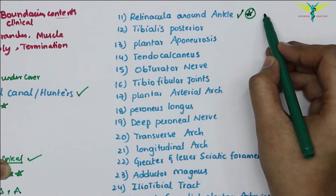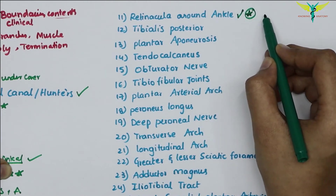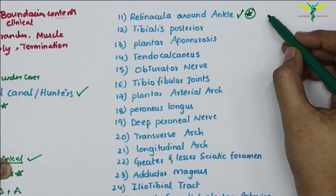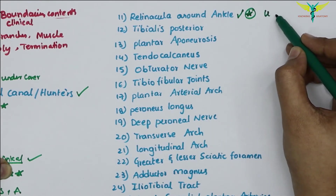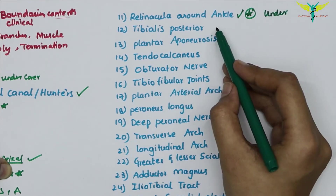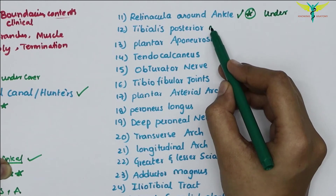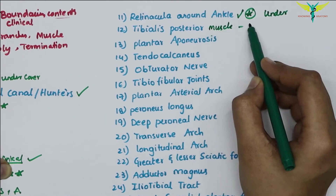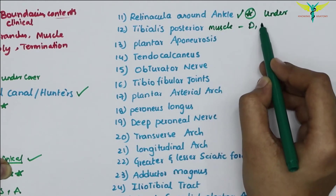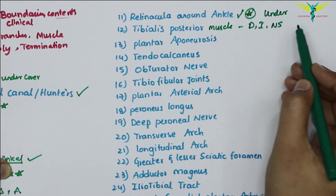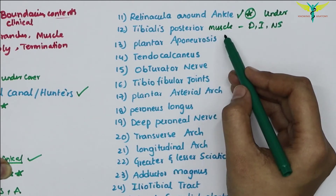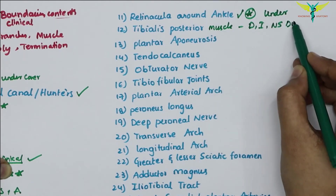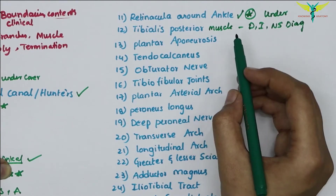The retinacula around the ankle are also important — similar to the flexor retinaculum in the upper limb. Draw a diagram and write about the structures under cover of it. The tibialis posterior muscle is also important — write about its origin, insertion, and nerve supply, with a diagram.